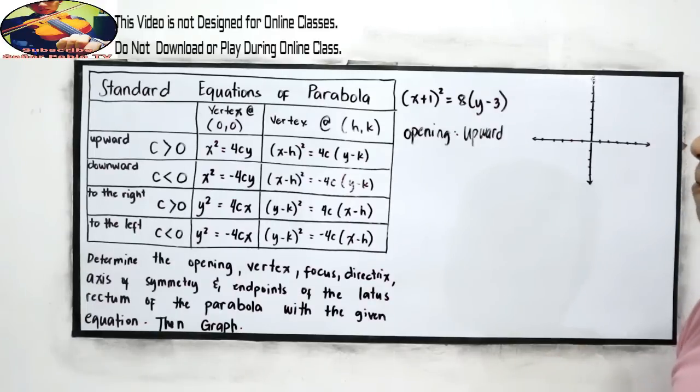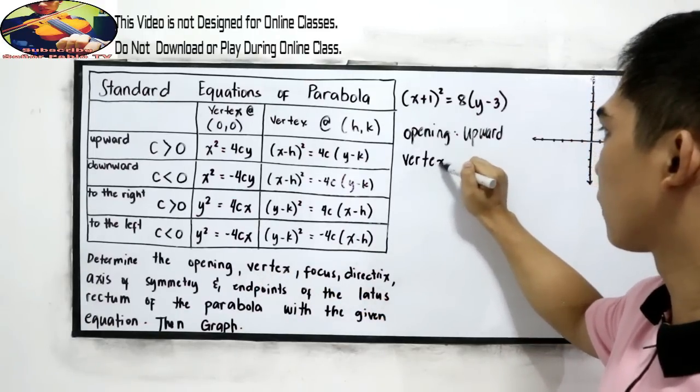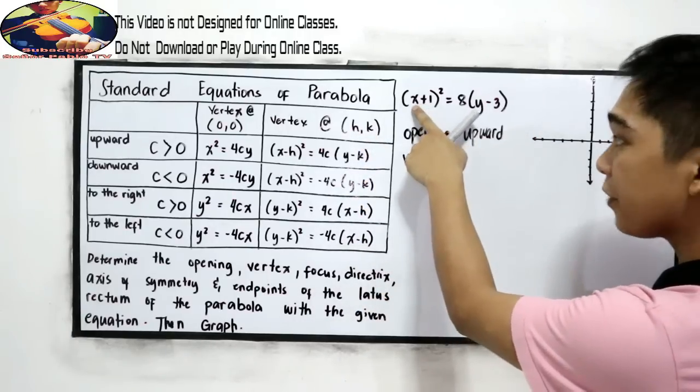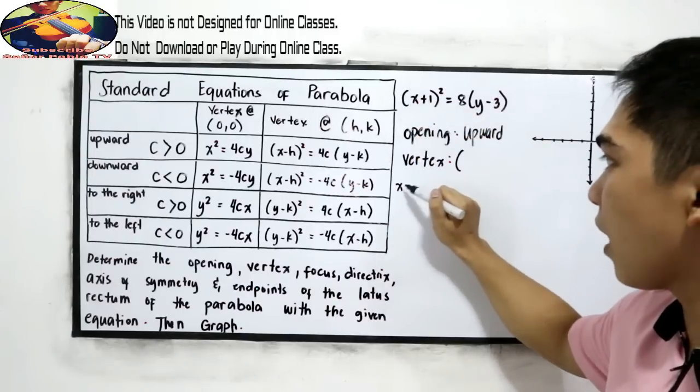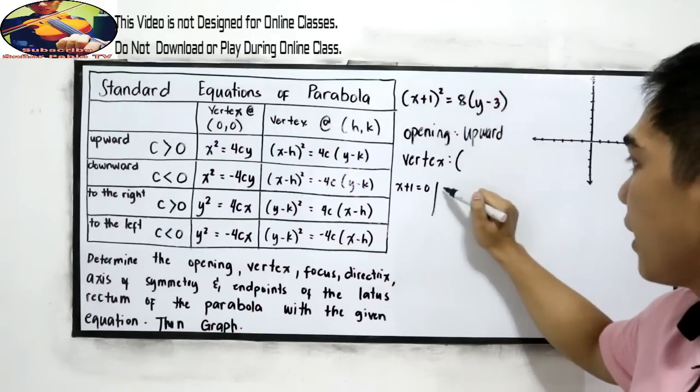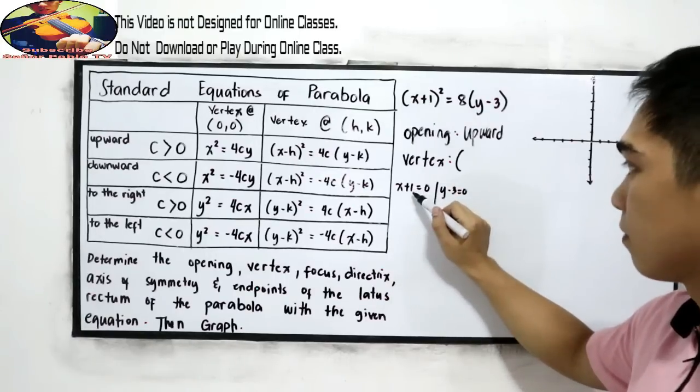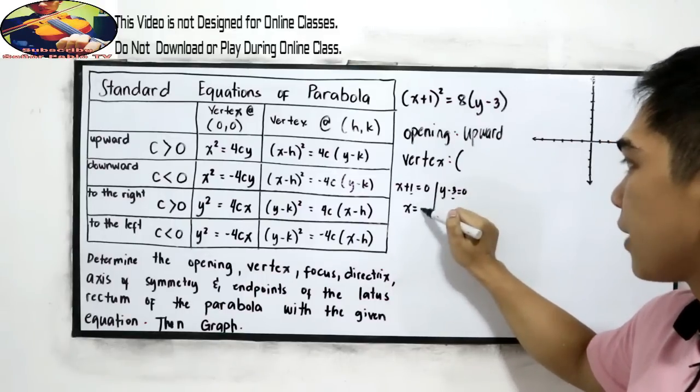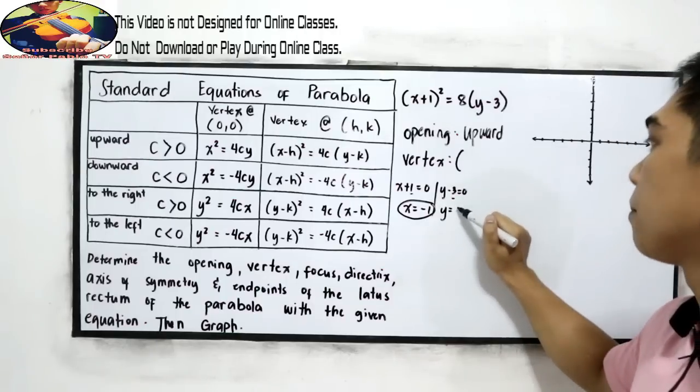Next, we're going to find the vertex. The vertex is our (h,k). So from the given, just equate to 0. So x+1 = 0, and for our y, y-3 = 0. This will be our h and our k. So x = -1, y = 3.